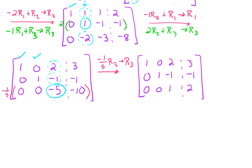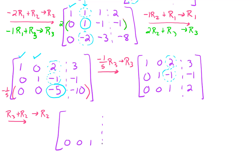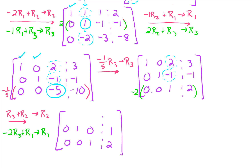We're almost done. We need to clean out the third column — get zeros in there. Let's add row three to row two and put the result in row two, which gets rid of that negative one. The second row becomes zero, one, zero, and two plus negative one gives one. Then to clean out the two in row one, we go negative two times row three, add that to row one: we still get one, zero, zero, and negative two times two is negative four plus three is negative one.